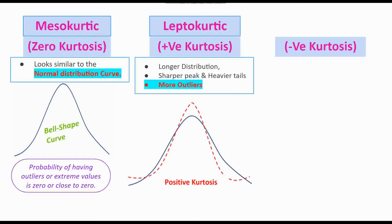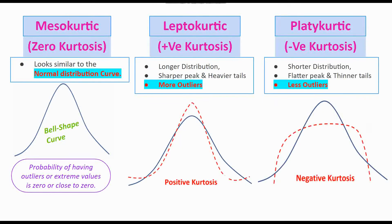Then we have negative kurtosis, also known as platykurtic, and it shows a shorter distribution. Again, see the red dotted line - it's showing flatter peak and thinner tails. Thinner tails means less outliers.